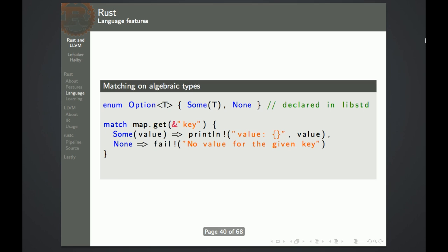Another concept borrowed from functional languages are algebraic types — basically enumeration types where you can store data inside the values. Here you see an Option that is either None or Some, and Some contains a value. This is a generic value so we can put anything here. It's used, for instance, as the return of a map get function. This is because Rust does not have any null pointers, so this is a way to handle the case when the map does not contain the value.